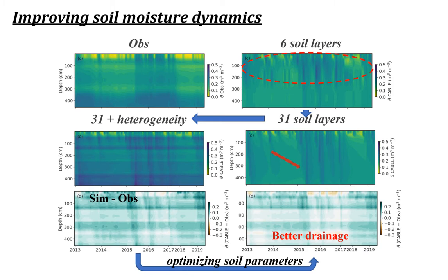We tried to further improve the soil moisture dynamics by increasing the vertical soil resolution, adding hydraulic heterogeneity, or optimizing the soil hydraulic parameters. These adjustments do improve the soil moisture dynamics, but due to uncertainties in observation sampling and the pedotransfer functions used, our simulation could not be completely matched to the observations.